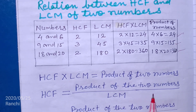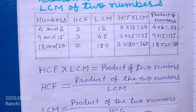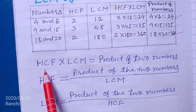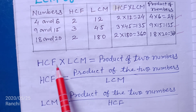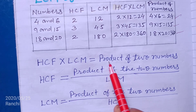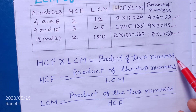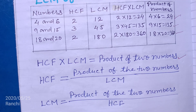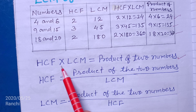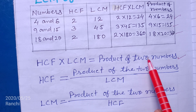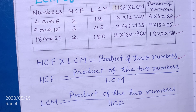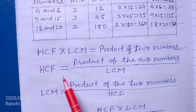We can derive the formula. So you must remember: HCF into LCM equal to product of 2 numbers. This is the first formula, and from this formula you can derive 4 other formulas.